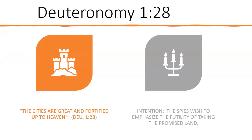Here's an example from Deuteronomy 1:28. The verse says, 'The cities are great and fortified up to heaven.' This is the report of the spies — an embarrassing report because they won't trust God. They go into the promised land and all they can see are the giants and the fortified cities. The spies say they're fortified up to heaven, meaning they think they're impregnable. They exaggerate how tall the walls are to convince Israel not to claim what God has promised.